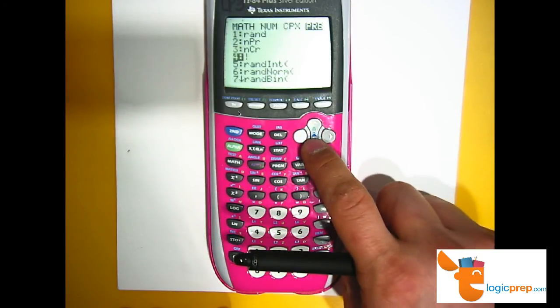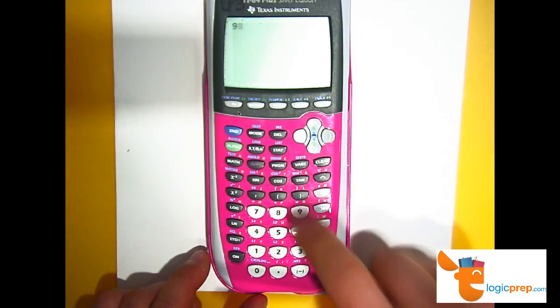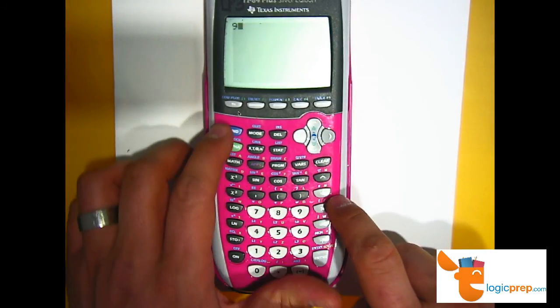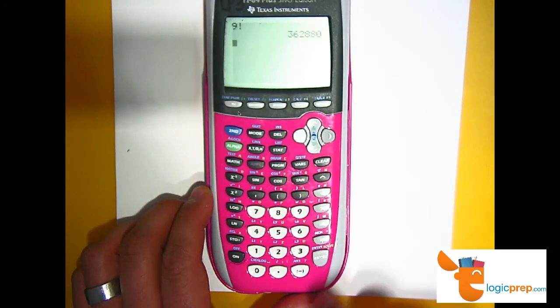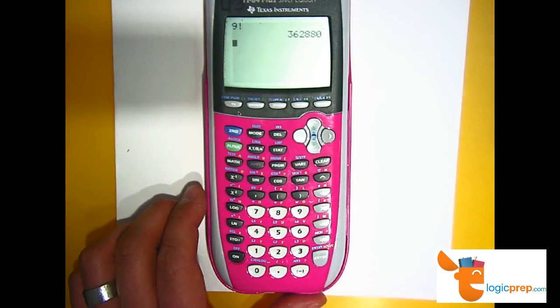And we go to probability, we can see the factorial symbol here and the nPr symbol here. So if I want to use the factorial symbol, then I first want to hit the button 9. And then I'm going to go to math, probability, factorial, and hit enter. And 362,880 is the answer.